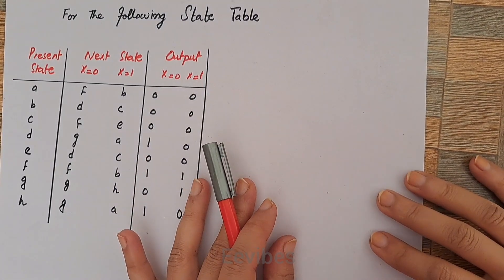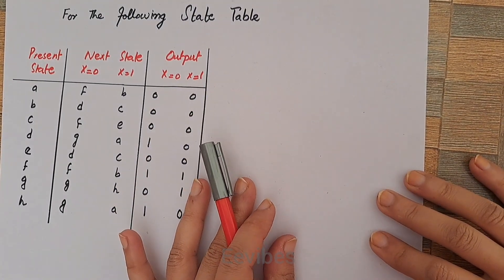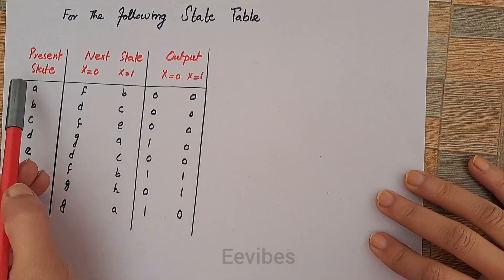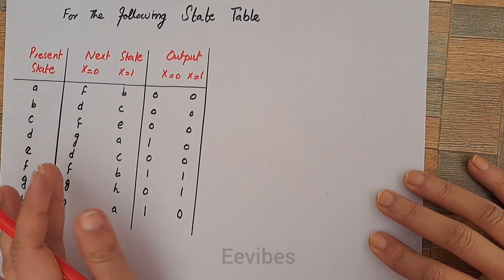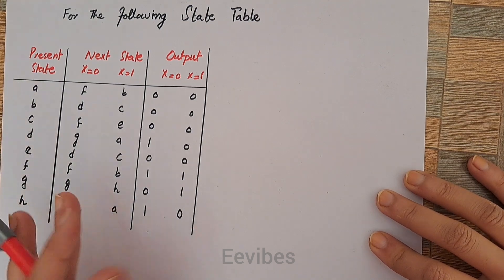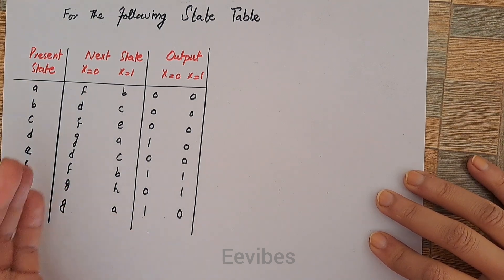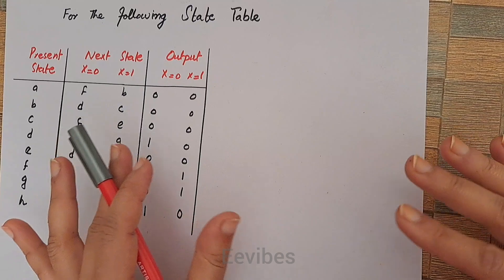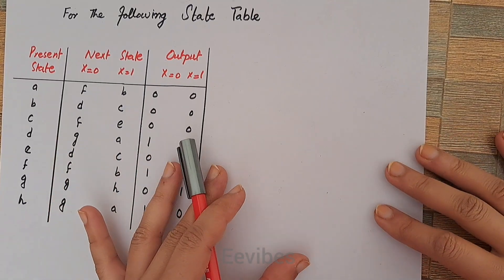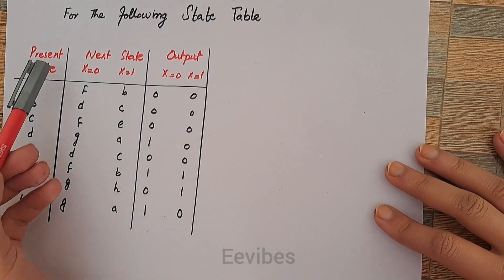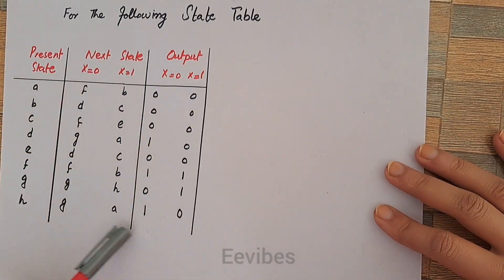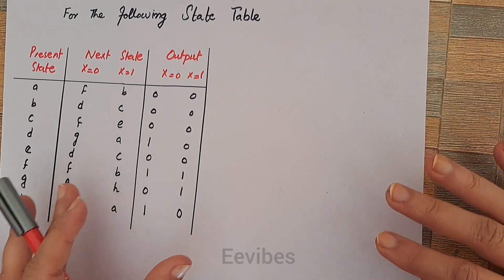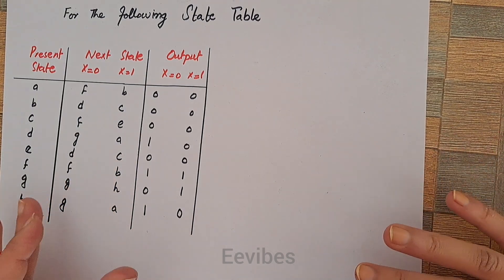Hi everyone, this is Asma Amishtak from the double-e-wives. In this video lecture, I am going to solve an end problem from Digital Logic Design by Morris Mano, where you are given a particular state table and asked to draw the state diagram for it. Also, you have to reduce the state table and finally draw the reduced state diagram.